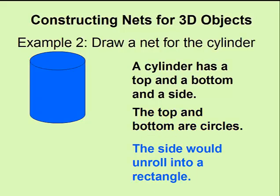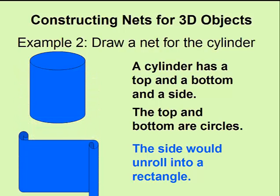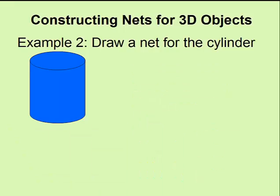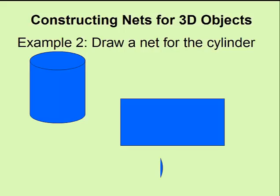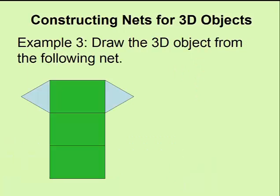The side, we would have to unroll it and it would produce the shape of a rectangle. So our net for a cylinder would be a rectangle with the bottom circle and the top circle. What would the length of the rectangle be with respect to the circle? It's the circumference, which would be two times pi times the radius. Now, we will provide you with the net and have you come up with the three-dimensional objects.